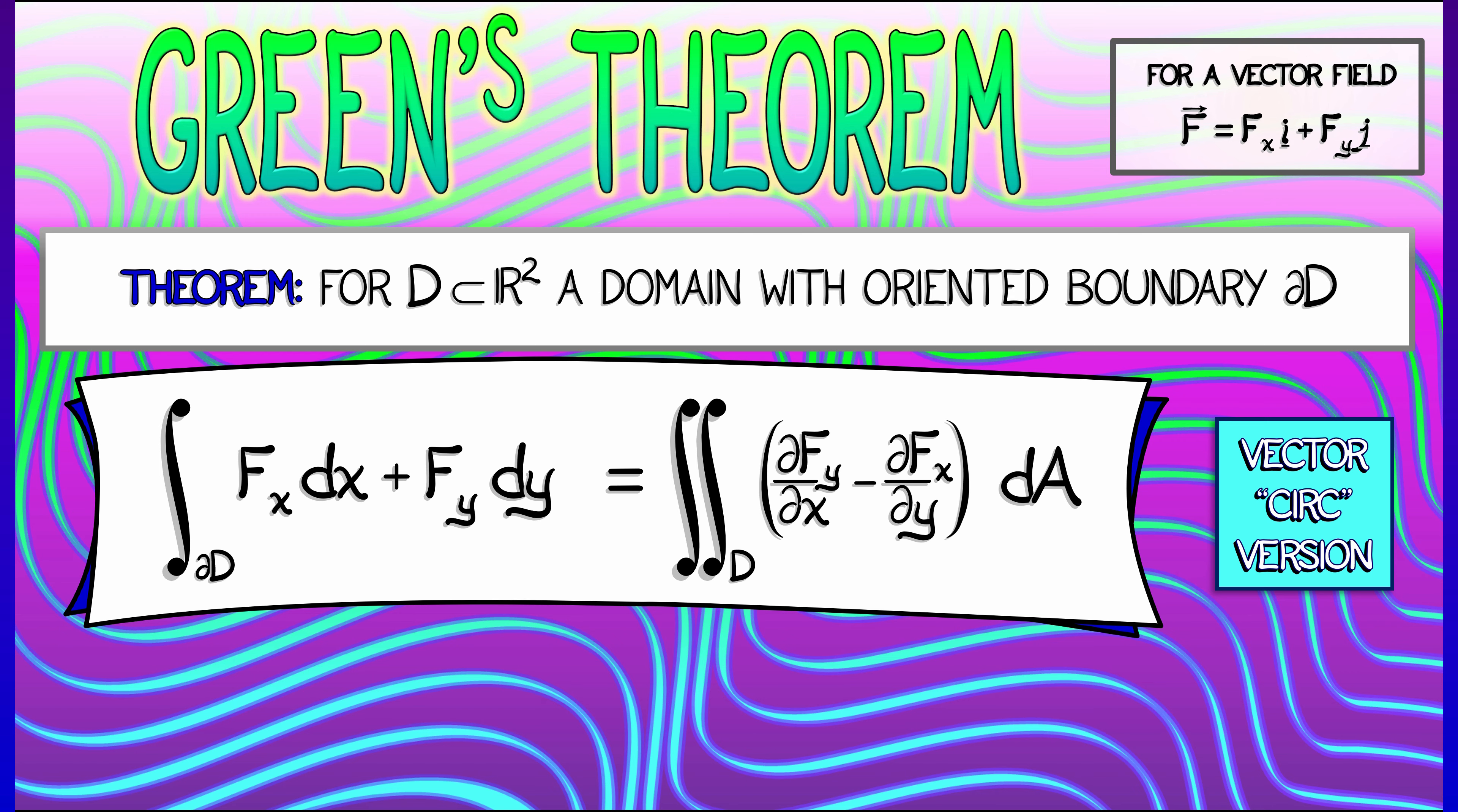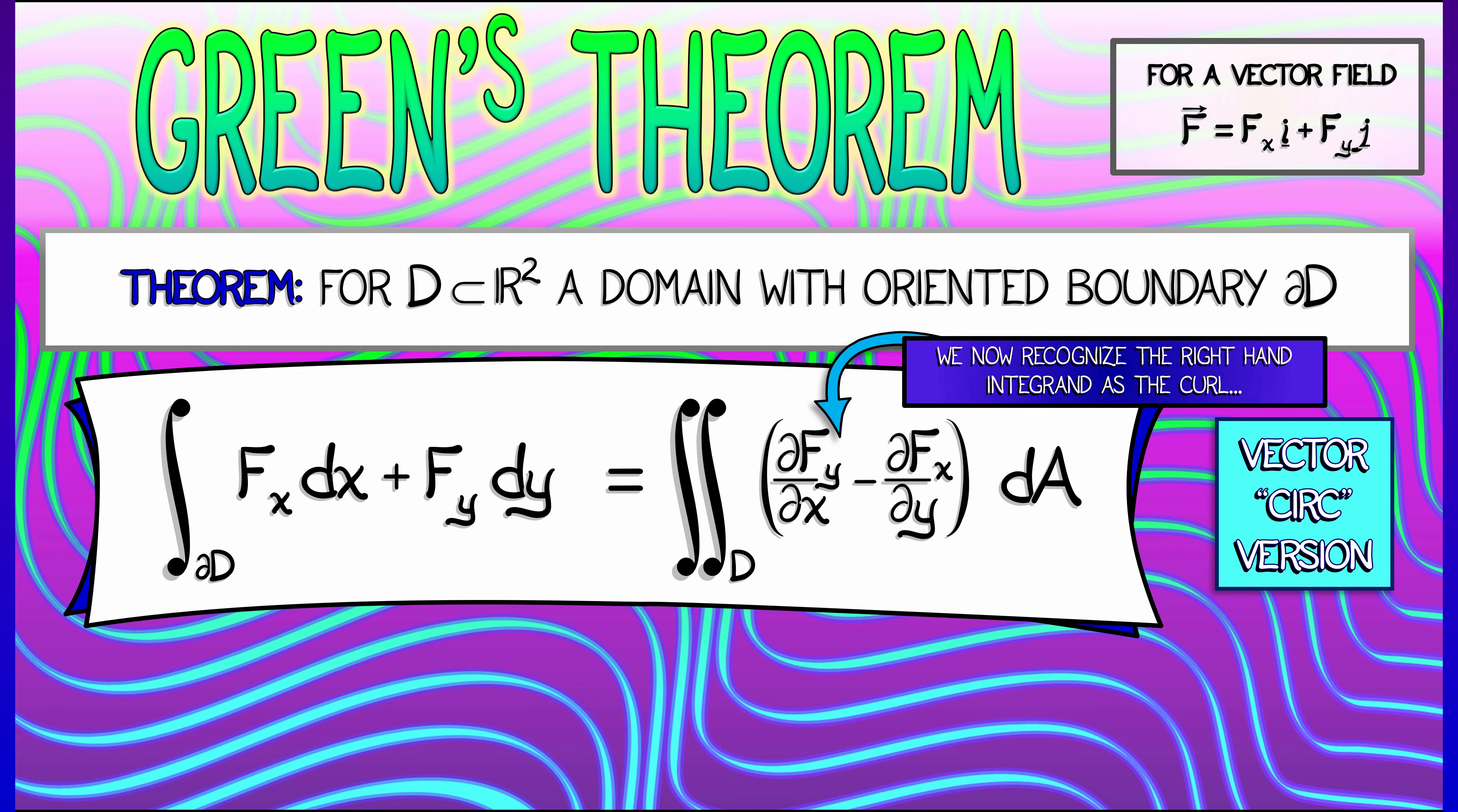Now that circulation density should be familiar to you. You should say, aha, that's really related to the curl of F. More specifically, since curl is a vector field, it's the K component of the curl of F. So we could write that circulation density as curl of F dotted with K. Okay, that's the vector version.